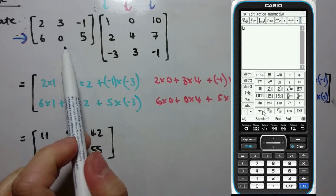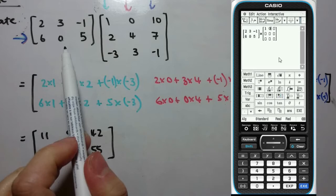Let's quickly verify this on the CAS. When doing operations with matrices, we don't necessarily need to define them first - we can just type them in. Type in the 2×3 matrix and multiply by the 3×3 matrix. If you press the square matrix button multiple times, it keeps adding rows and columns to keep it square. Enter all the elements and it gives us the matrix multiplication result to verify our answer.